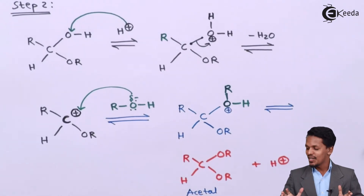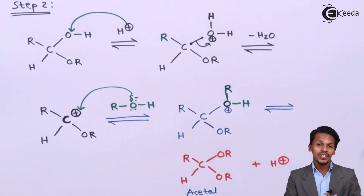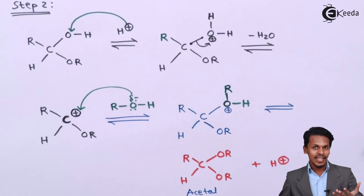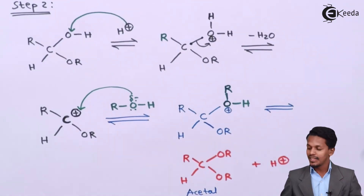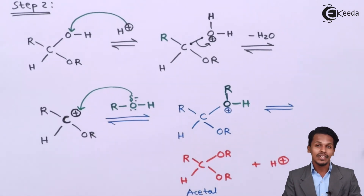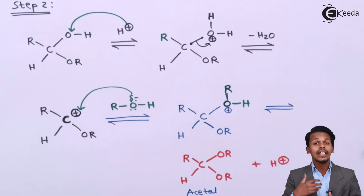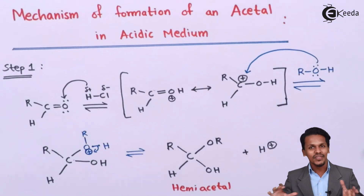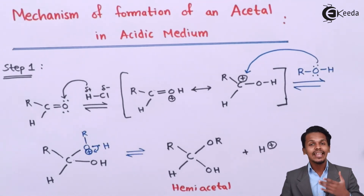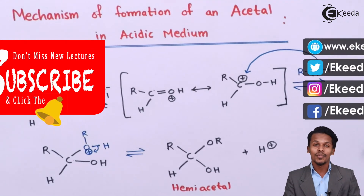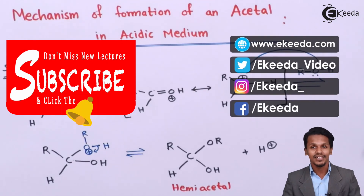The main product formed is RCH(OR)(OR), which is the acetal. The H⁺ ion released can be used by another alcohol molecule, regenerating the acid catalyst. To form a ketal instead of an acetal, we simply replace the H on the aldehyde with an alkyl group and the rest of the mechanism remains the same. Thank you friends for watching; please subscribe to the Eketa channel.